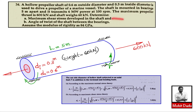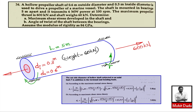We use the maximum shear stress theory equation (3.8b) to find τ_max. In this equation, d_o is the outer diameter and capital K is the ratio of inner diameter to outer diameter. So K = 0.3 / 0.6 = 0.5. The axial thrust force f = 600 kilonewtons = 600 × 10³ N.